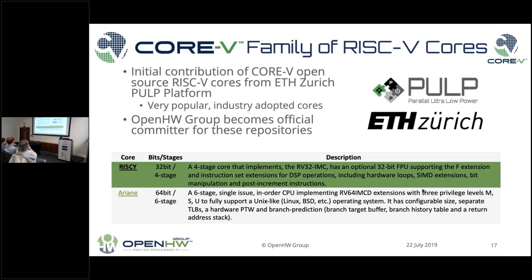As a starting point, one of the sponsors is ETH Zurich. In particular, the PULP team — Parallel Ultra Low Power Research Team — under the banner of the PULP platform, where the RISC-E core and Ariane cores came from. We will become the official committer of these repositories for this 32-bit four-stage core, the RISC-E core, and the 64-bit six-stage Ariane core. As we do that, the ETH Zurich team transitions into a contributor role, like any other interested party, as the Open Hardware Group takes over official committer responsibilities.